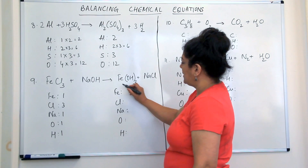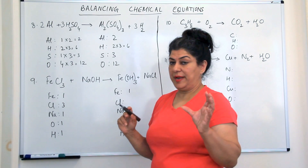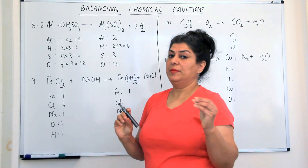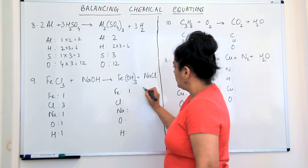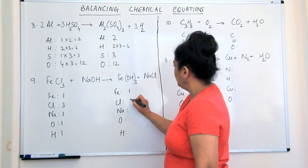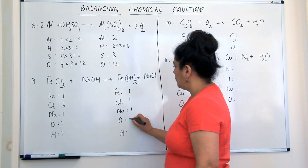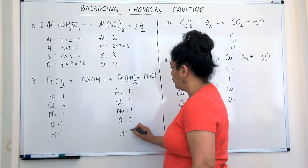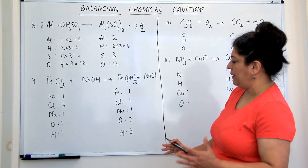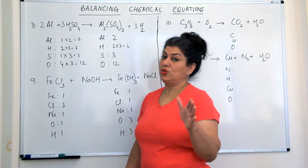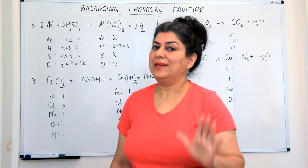On the product side, we have one iron. Whenever you have anything in brackets or parenthesis, you have to multiply every element inside it with the subscript given outside. Chlorine is one, sodium is one, oxygen would be three, and hydrogen would also be three. So what do we have balanced and what do we have unbalanced? Hydrogen and oxygen are not balanced, but since they are usually present in more than one reactant or product, we try to balance them in the end.